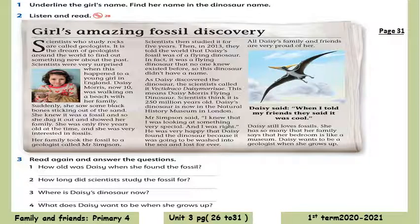Now open page 31, number 2: listen and read. Girl's Amazing Fossil Discovery. Scientists who study rocks are called geologists. It is the dream of geologists around the world to find out something new about the past. Scientists were very surprised when this happened to a young girl in England — Daisy Morris. Daisy Morris, now 10, was walking on a beach with her family. Suddenly she saw some black bones sticking out of the sand. She knew it was a fossil, so she dug it out and showed her family. She was only five years old at the time and was very interested in fossils.